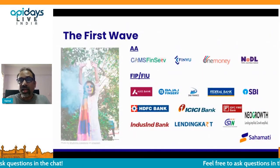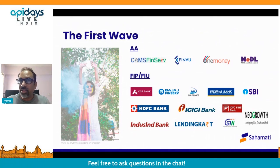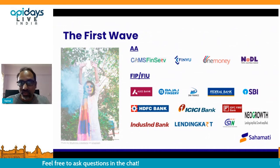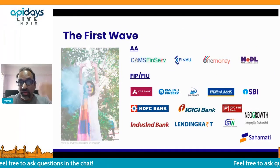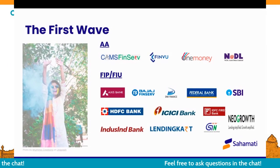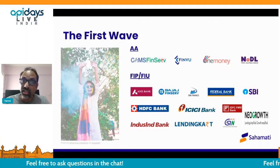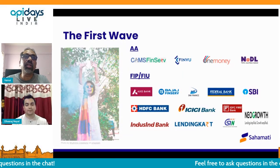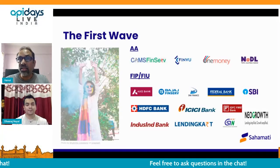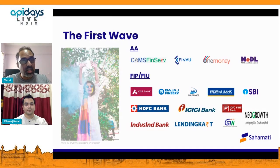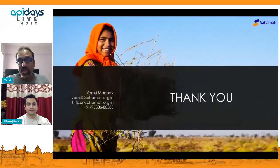So where are we today? Many of us have been waiting for a while for this ecosystem to go live, and there's been a lot of activity happening. The first wave of participants in terms of AAs, FIPs, and FIUs are ready. Several of these entities are certified, as you see on the screen. And hopefully in the month of June, you will see the first set of banks going live. Happy to share more information with any of you — please do reach out to me. Thank you.